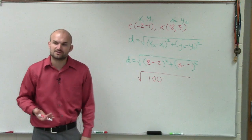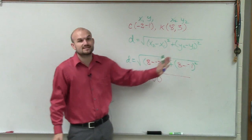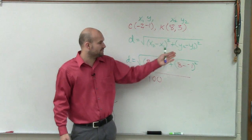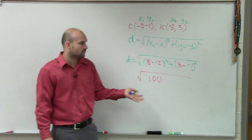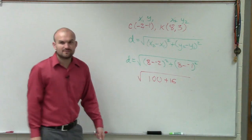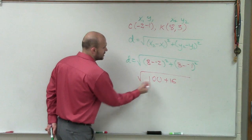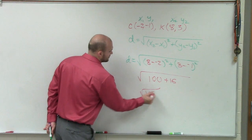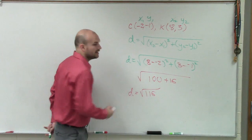So remember guys, what we're doing here is we're applying our order of operations. We're doing inside the parentheses first, and then we're doing the powers. 3 minus a negative 1 is 4, 4 squared is 16. Then you have 100 plus 16 is going to be 116.